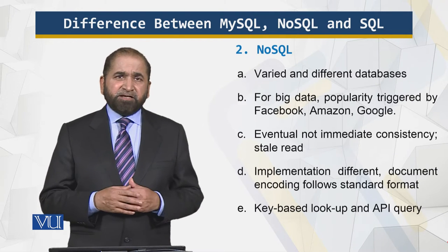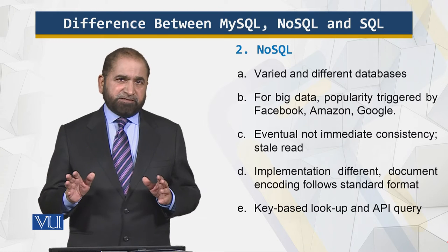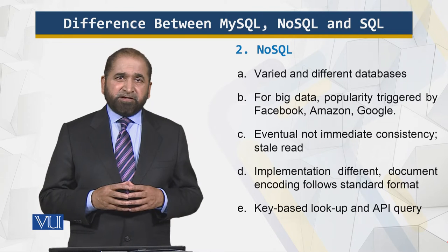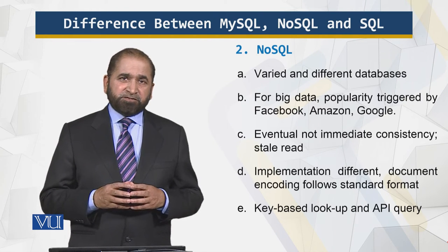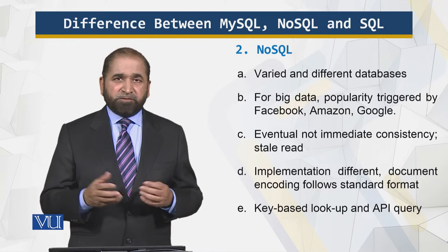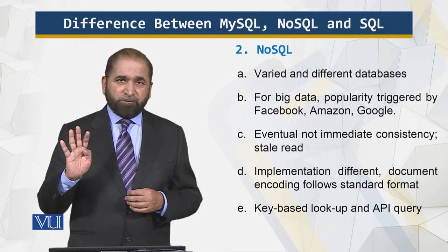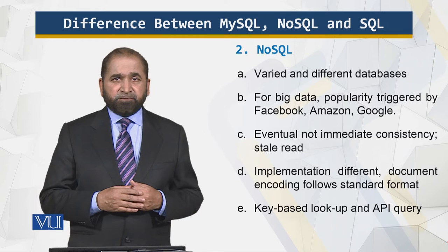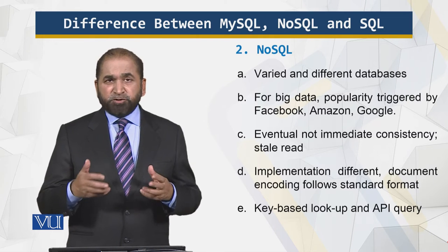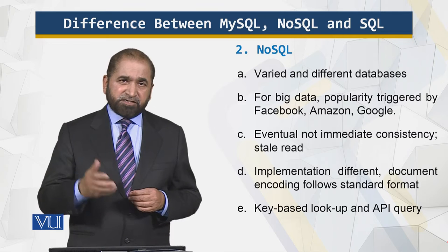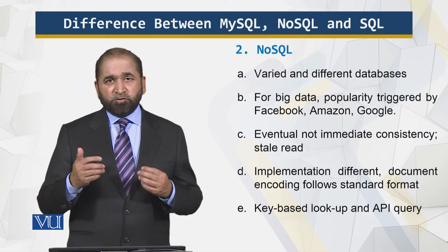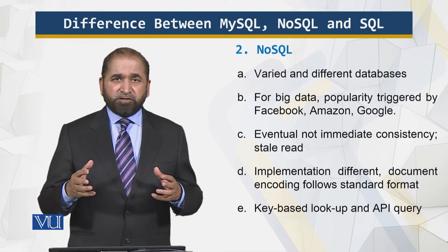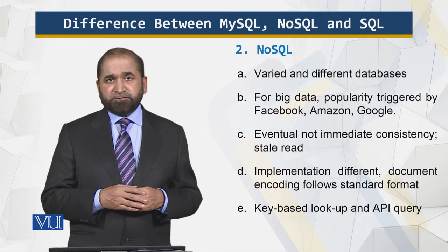NoSQL has varied and different databases — it actually supports four types: columnar, triples, key-based, and document-based, as opposed to the single relational model in MySQL. It is hugely popular for big data, and this popularity was triggered by Facebook, Amazon, and Google. These are huge setups, and NoSQL supports the applications running at that scale.